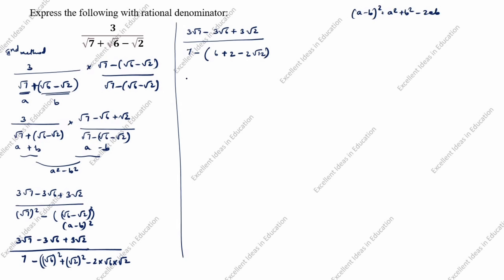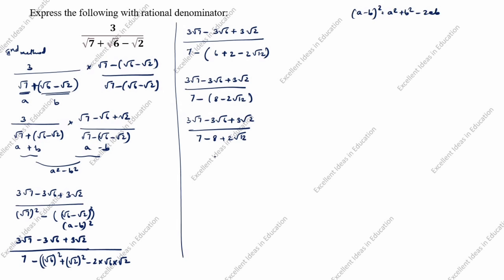Using the a minus b whole square formula (a squared plus b squared minus 2ab) to expand (root 6 minus root 2) squared: we get 3 root 7 minus 3 root 6 plus 3 root 2, divided by 7 minus (6 plus 2 minus 2 root 12), which gives 7 minus 8 plus 2 root 12. Simplifying: 7 minus 8 gives minus 1, so the denominator is minus 1 plus 2 root 12.